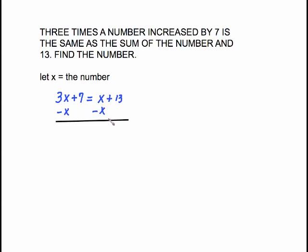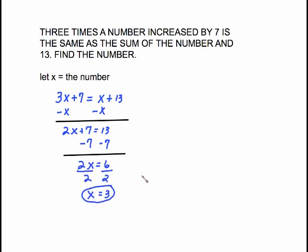Get your x's on one side and numbers to the other. So subtract x from both sides. Gives us 2x + 7 equals 13. Subtract that 7 from both sides and you have 2x equals 6. Finish out by dividing by 2 and you get x equals 3.